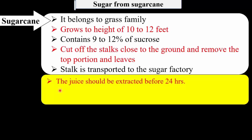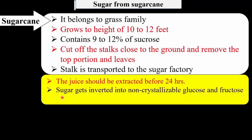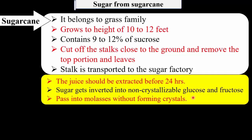At the factory, juice from the sugarcane must be extracted within 24 hours, because after 24 hours the sugar gets inverted into non-crystallizable glucose and fructose. This glucose and fructose then pass into the molasses without forming crystals.